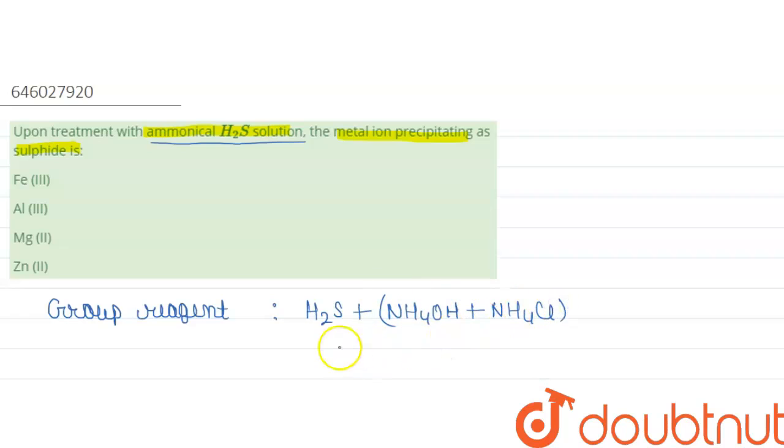Okay, so this is your group reagent, and which group reagent? This is your third group reagent. This will only precipitate third group cations, and in the third group, as you know, zinc is present.